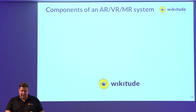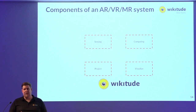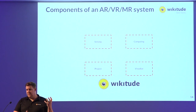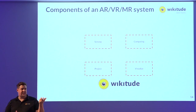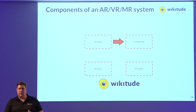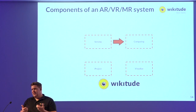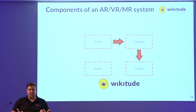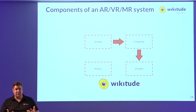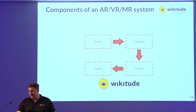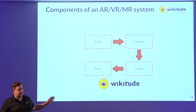Going a step back and looking at what generic components an AR, MR, or VR system is made of, I identified four: a sensing component — sensors that get information from the outside world: gyroscope, accelerometer, GPS, barometers, microphones, cameras; a computing engine where algorithms work with this information; a visualization component, typically a rendering engine; and an output onto a projection of some kind. The left-hand side is very hardware-driven, the right-hand side is very software-driven.